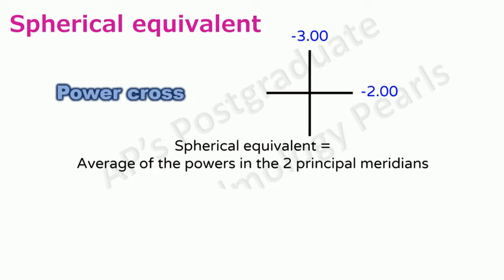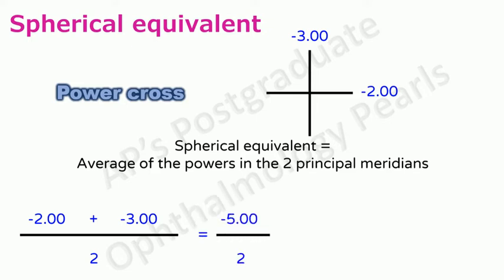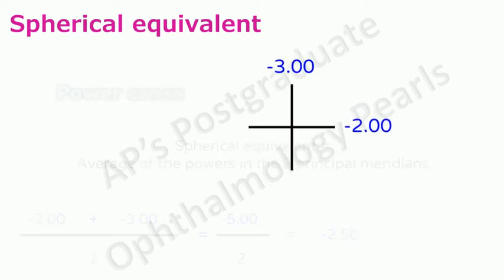To calculate the spherical equivalent from the power cross simply take the average of the powers in the two principal meridians. So the average of minus 2 and minus 3 is minus 2 plus minus 3 divided by 2. This is equal to minus 5 divided by 2 that is minus 2.5. So minus 2.5 is the spherical equivalent.